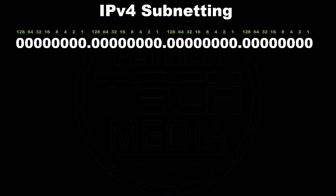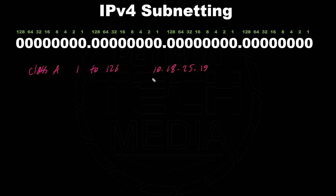So we already know the default range for Class A. In the first octet, the range goes from 1 to 126. So when we see an IP address like 10.18.25.19, we know this is a Class A IP address. Looking at the first octet — 10 — it falls into this range, therefore this is Class A.